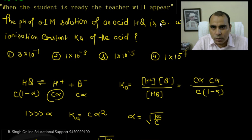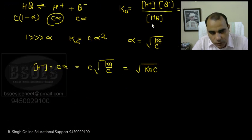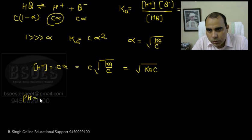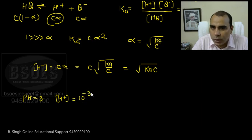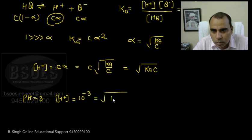Now we will find the value from pH. If pH is 3, then hydrogen ion concentration is 10 to the power minus 3. Hydrogen ion concentration is 10 to the power minus pH. So hydrogen ion concentration equals square root of Ka times c, where c is 0.1, giving us 10 to the minus 3 equals square root of Ka times 0.1.